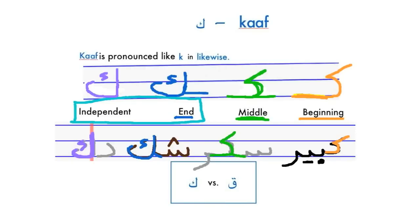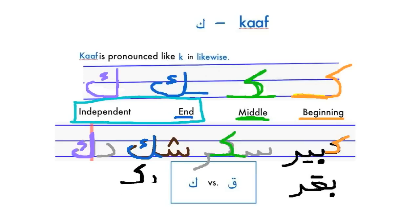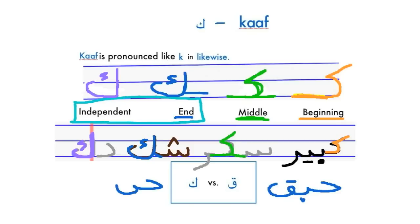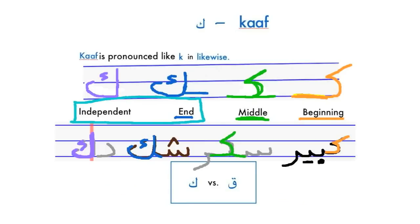Now let's compare the letter Qaf versus the letter Kaf. One example would be the word 'Baqar' versus the word 'Bakar.' Another example would be 'Habaq.' Here is another good example: the word 'Saddak' versus the word 'Saddak.' So the letter Qaf makes a deeper K sound, while the letter Kaf makes the K sound like in English.